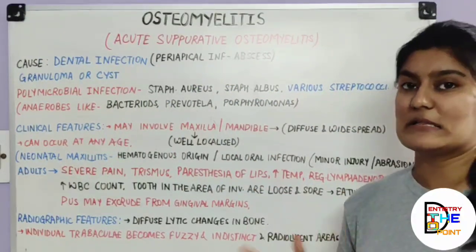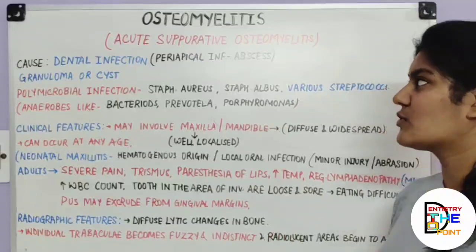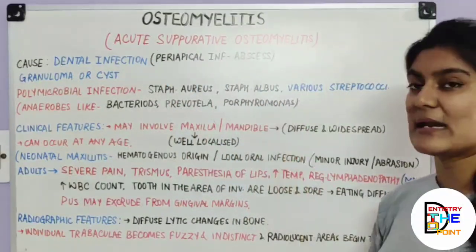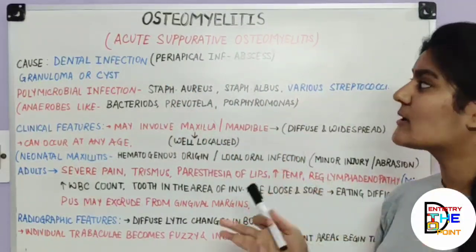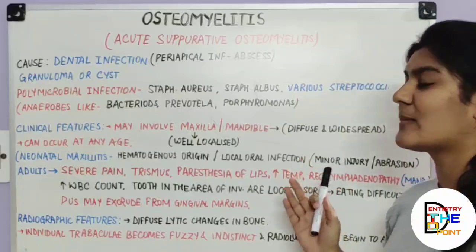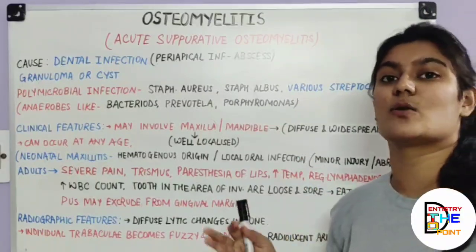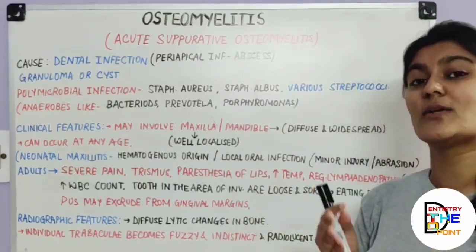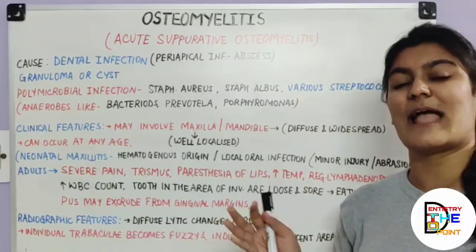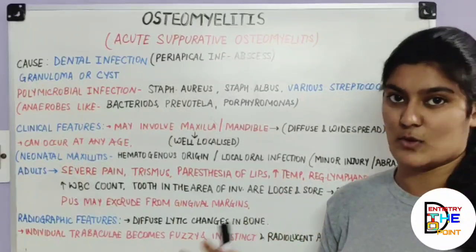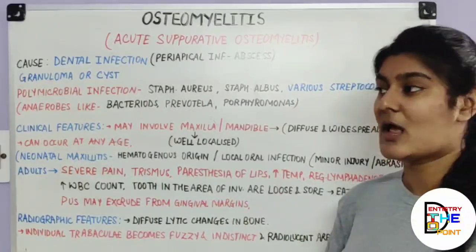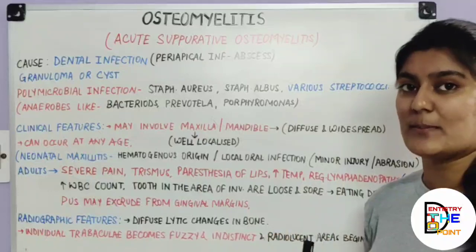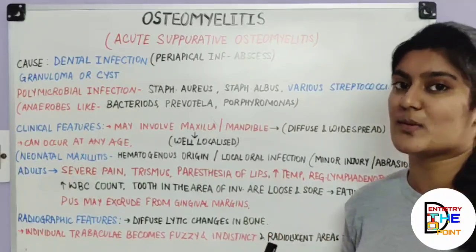Moving on to the various types of osteomyelitis — there are five distinct types: acute suppurative osteomyelitis, chronic suppurative osteomyelitis, chronic focal sclerosing osteomyelitis, chronic diffuse sclerosing osteomyelitis, and Garre's osteomyelitis. We are going to see them one by one as each of them is very important.